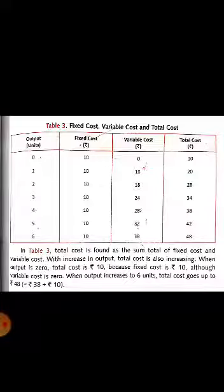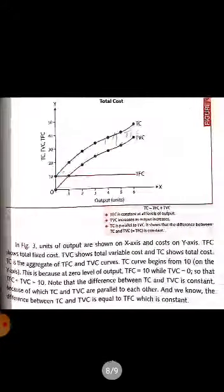When output increases to 6 units, then total cost also increases to 48 rupees. The table shows this. Now here is the diagram that we can draw from the table. On x-axis output is given and on y-axis costs are there.